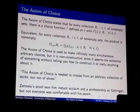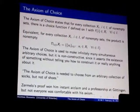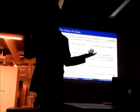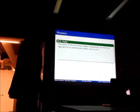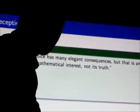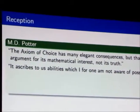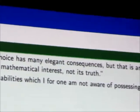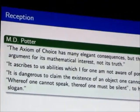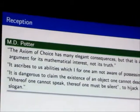A lot of people were not comfortable with this axiom. I have a whole bunch of fantastic quotes from authorities of the day. The axiom of choice has many elegant consequences, but that is an argument for its interest, its mathematical interest, not its truth. Potter also said, it ascribes to us abilities which I, for one, am not aware of possessing. It is dangerous to claim the existence of an object one cannot describe. Whereof one cannot speak, thereof one must be silent to hijack Wittgenstein's slogan.